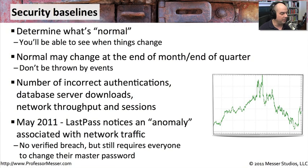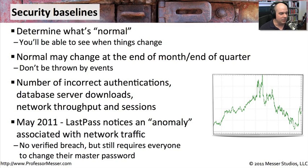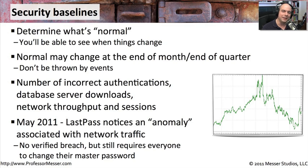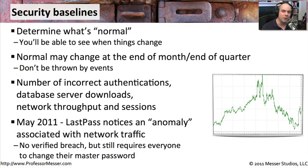There are cases where looking at these logs can give you insight into what's happening in your environment. A good example is from May 2011. The organization LastPass, which provides single-password management inside your browser and on your computer, was looking at their logs and noticed what they called an anomaly in network traffic — more data appeared to be downloaded from a particular server than normal. They examined their internal processes and logs and realized it wasn't them creating that extra traffic. They didn't have a verified data breach, but felt the potential was there, so they required all of their millions of users to change their passwords. It's a great example of how, if you understand your baseline and keep a close eye on it, you can stop a potentially bad problem before it gets out of hand.